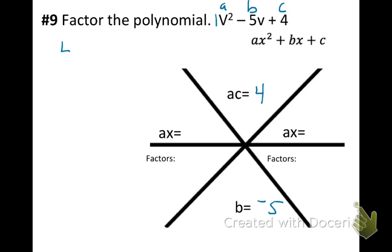So we're going to need to have negatives in the mix. So we need two numbers that will multiply together to give us positive 4, but add to give us negative 5. So they both need to be negative.